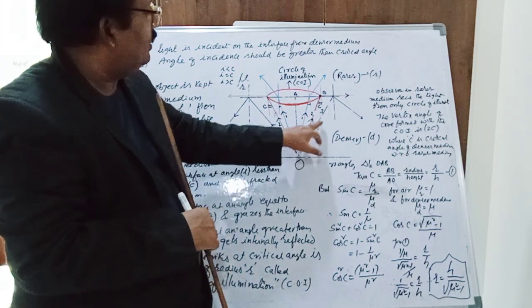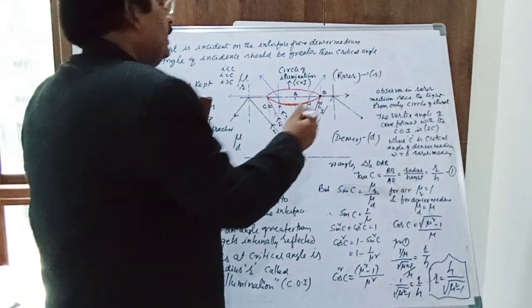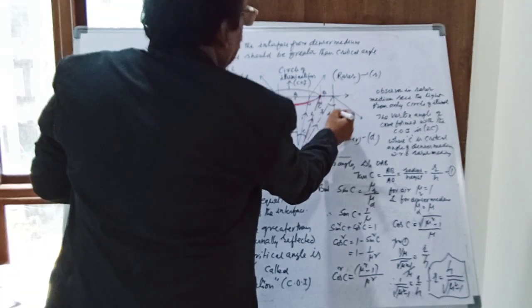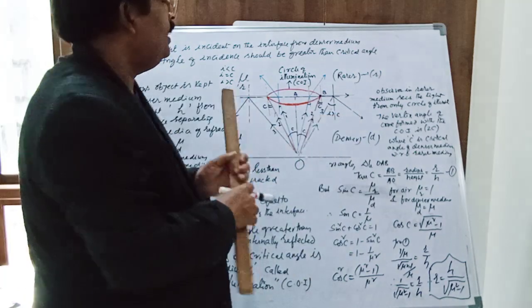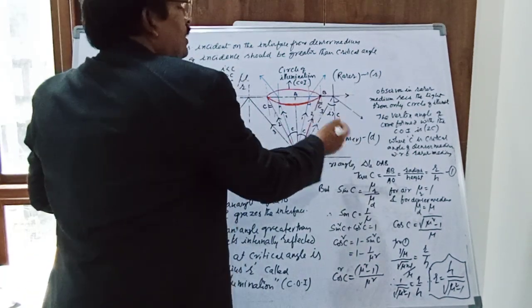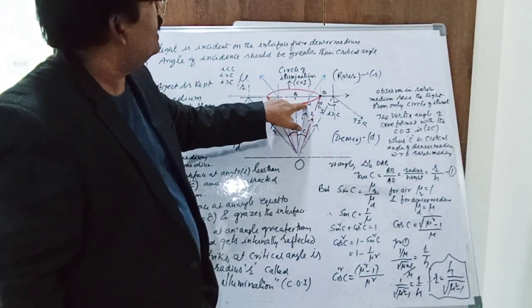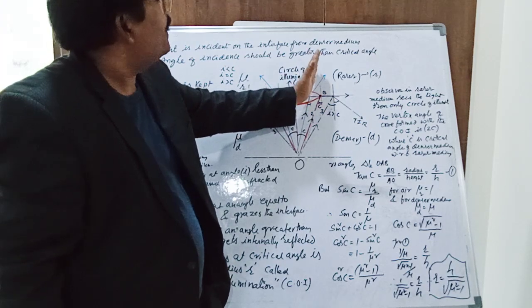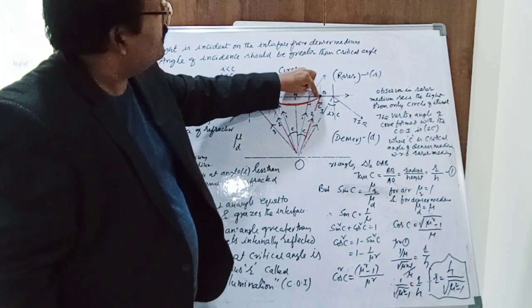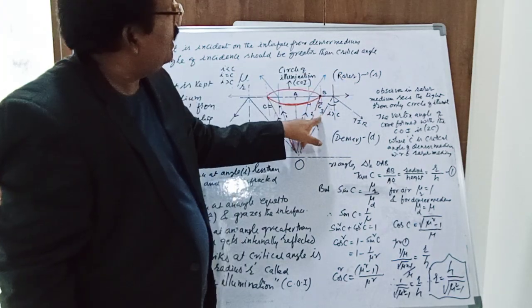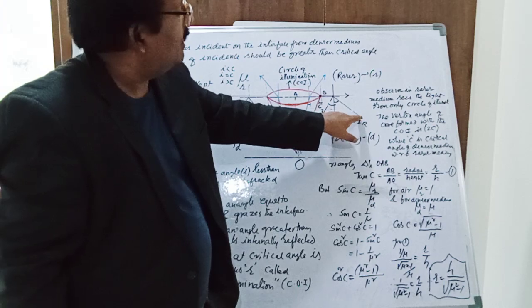Third case: the ray is incident on the interface such that the angle of incidence is more than the critical angle. If i is greater than the critical angle, total internal reflection takes place — the ray is totally internally reflected in the same medium, and the angle of incidence equals the angle of reflection.